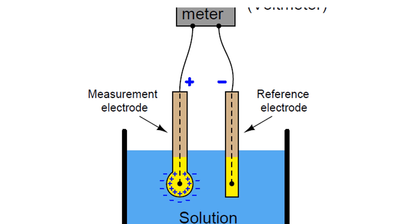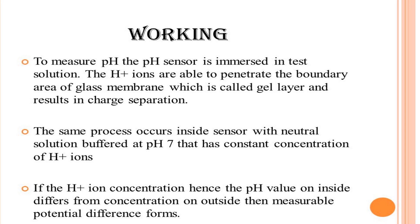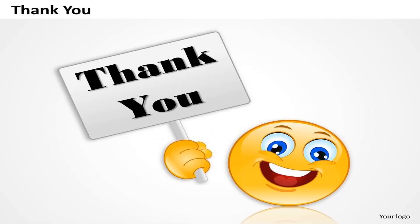To measure the pH, the pH sensor is immersed in the test solution. Hydrogen ions penetrate the boundary areas of the glass membrane, called the gel layer, resulting in charge separation. The same process occurs inside the sensor with a buffer solution at pH 7 that has a constant concentration of hydrogen ions. If the hydrogen ion concentration on the inside differs from the concentration on the outside, a measurable potential difference is formed.